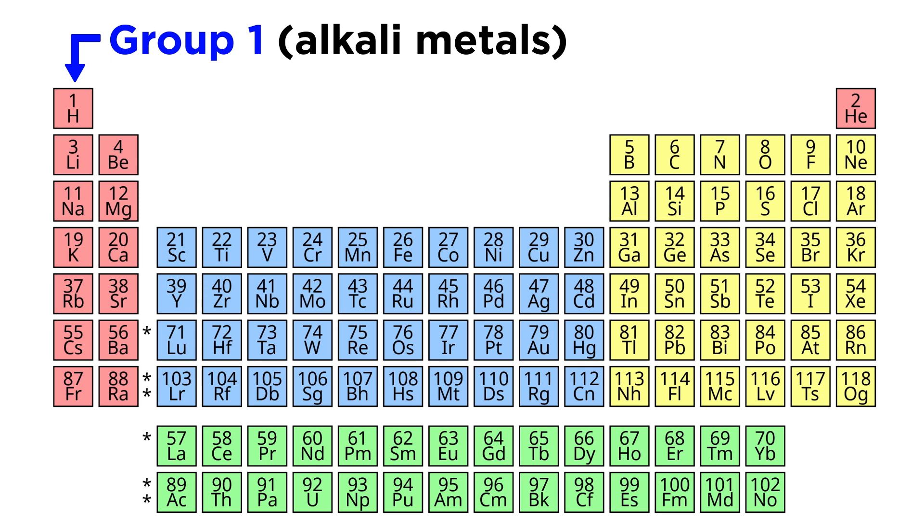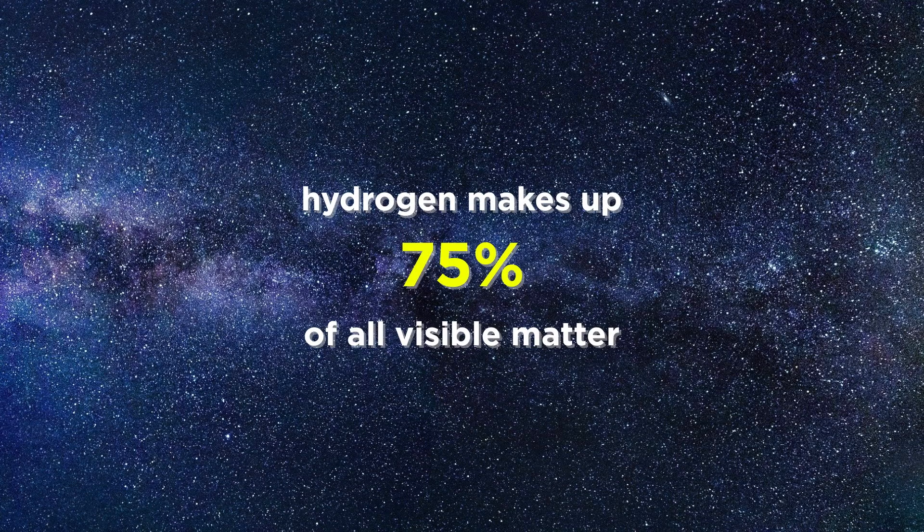It is technically a group 1 element, but group 1 is the alkali metals, and hydrogen is a nonmetal. And since hydrogen makes up around 75% of the visible matter in the universe, it is ubiquitous in astronomy as well as chemistry, and deserves a few minutes all to itself.